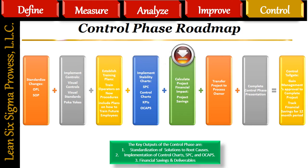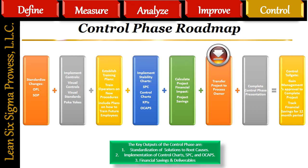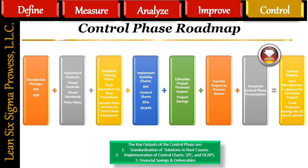Step 5: Calculate the financial savings for the project and verify whether the team has satisfied the customer's expectations. Step 6: Transfer the project to the process owner. Step 7: Complete the Control phase presentation. Step 8: Control Tollgate — gain management's approval to complete the project. The project leader, along with the process owner, are responsible for tracking the financials from this project for the next 12 months. The key outputs of the Control phase are: 1. Standardization of solutions to root causes, 2. Implementation of control charts, SPC, and OCAPs, and 3. Financial savings and project deliverables.